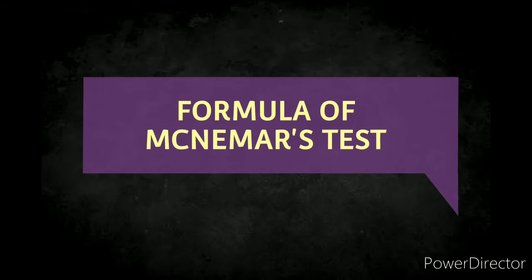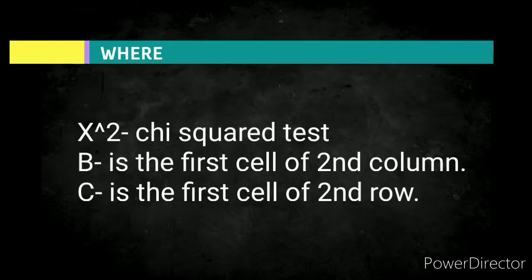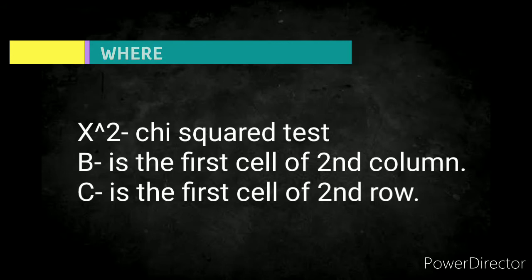Formula of McNemar test. So, this is the formula of McNemar test, where chi-squared means chi squared test. B is the first cell of the second column, while C means the first cell of the second row.